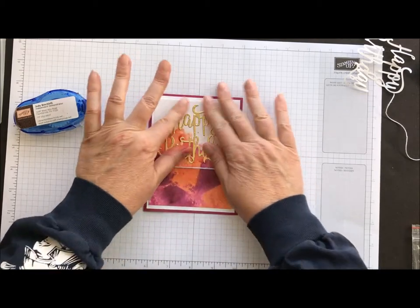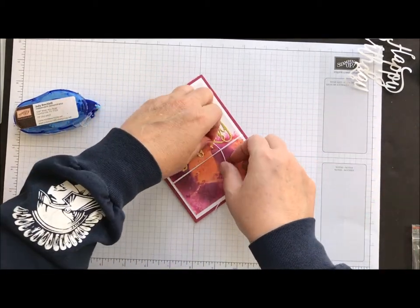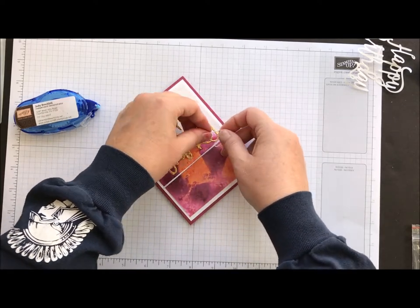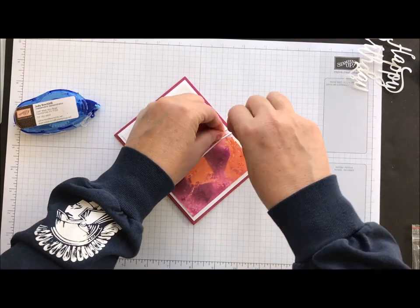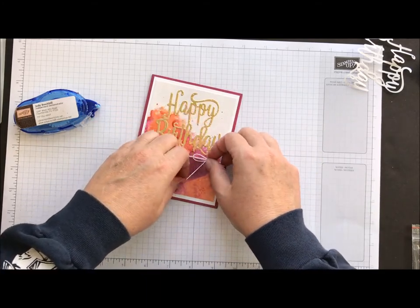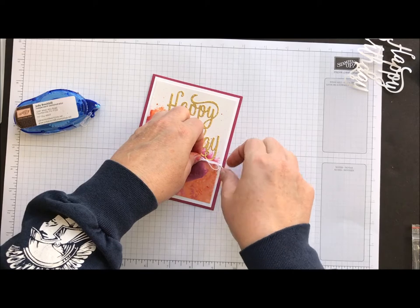So easy peasy mac and cheesy, right? Okay. Took another piece of Baker's twine and I'm just going to slide that under those two little pieces there and I'm going to tie myself a bow. Maybe. Let's see if my fingers will be working today. Yeah, there we go. Just a cute little bow.